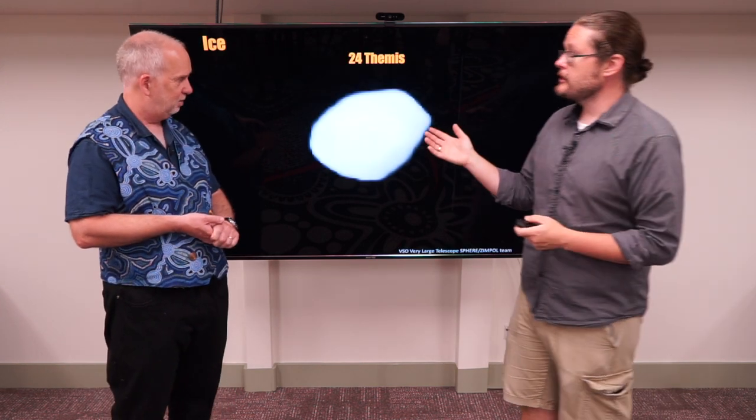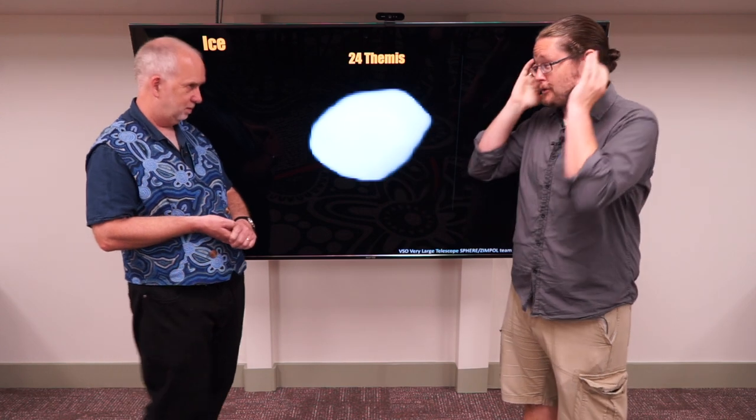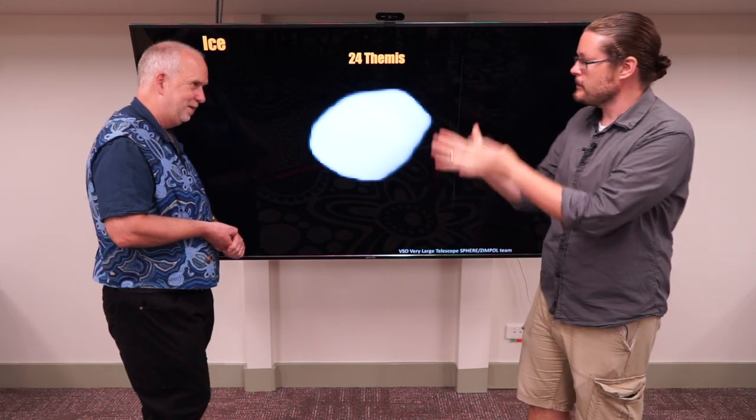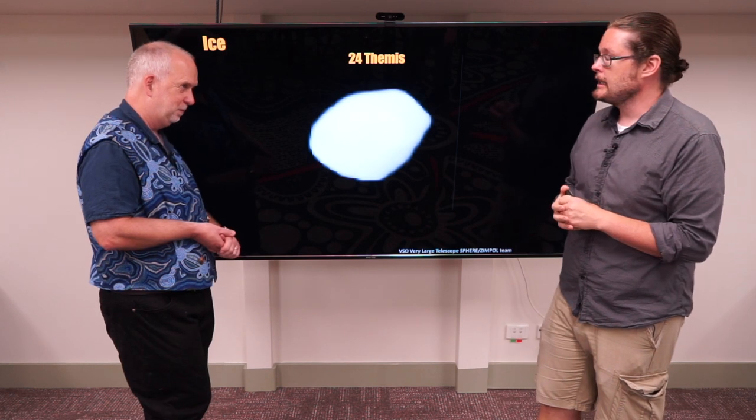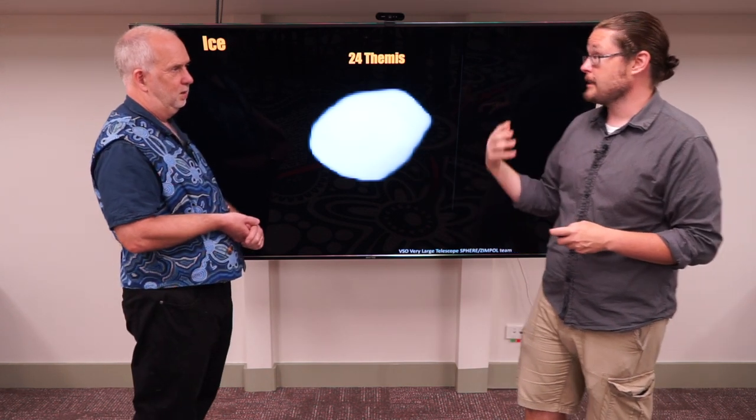So can you give us an example of how one might analyze a particular asteroid? Well, this is a good example because this is one that has actually been used to look for ice. Now, we've talked a lot about metals recently, but we also talked about that maybe some of these other asteroids that have more volatiles actually could be rich in water or organics or ice.